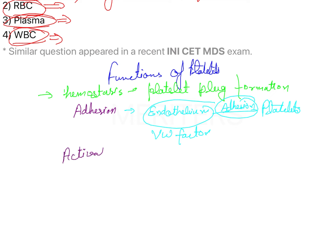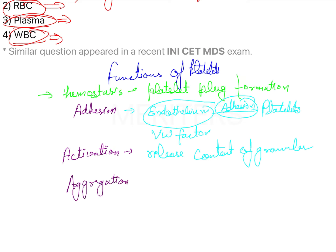After adhesion, there is activation. The platelets get activated, undergo a shape change, and release the contents of their granules — this is called degranulation. After activation, there is aggregation, where contents of the granules such as ADP, PAF, and thromboxane are released, which act to produce even more aggregation of the platelets.